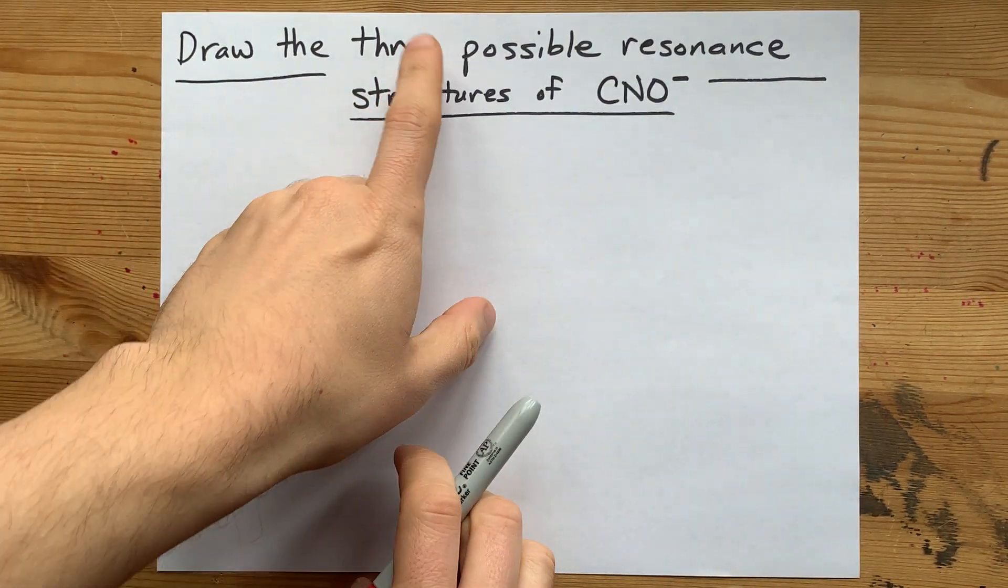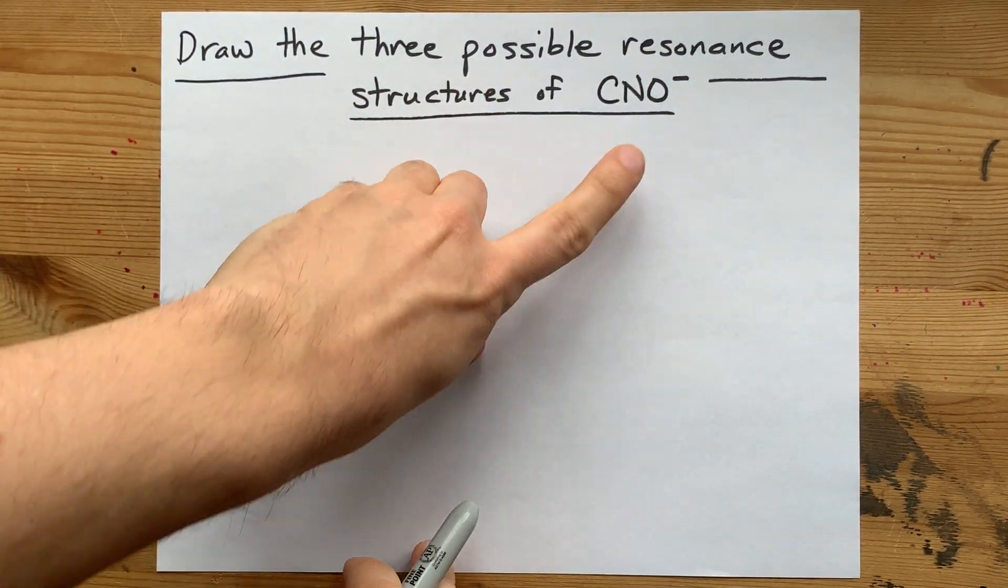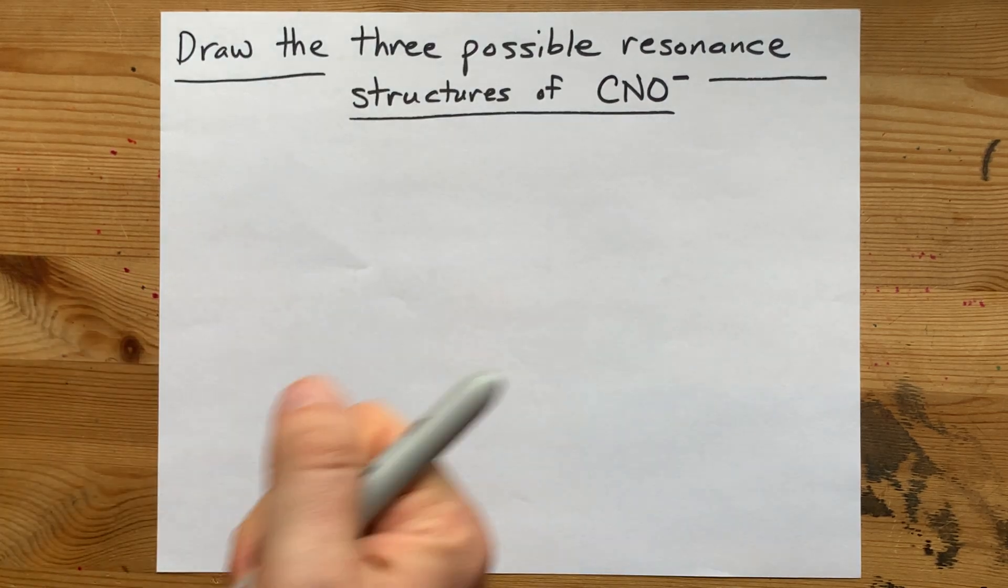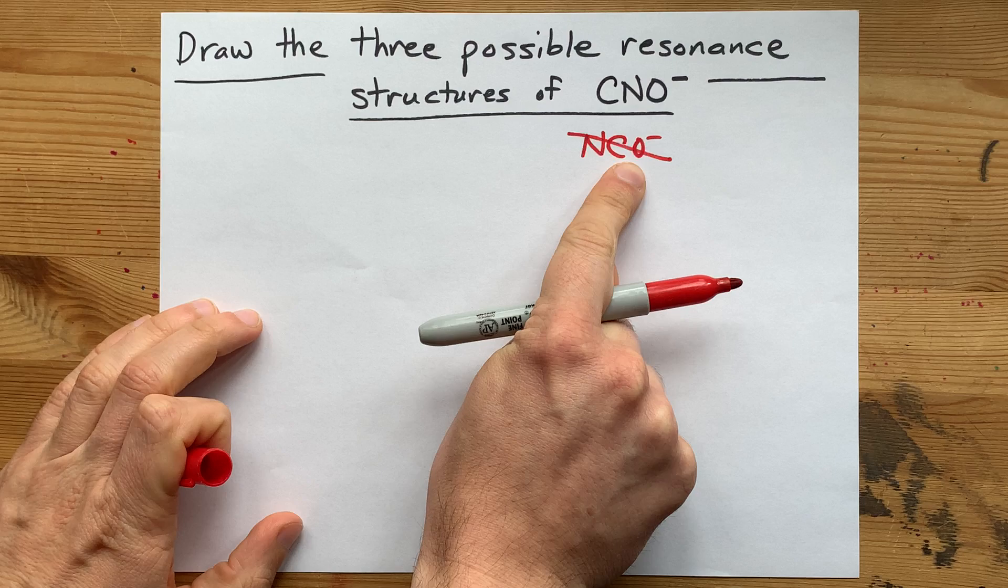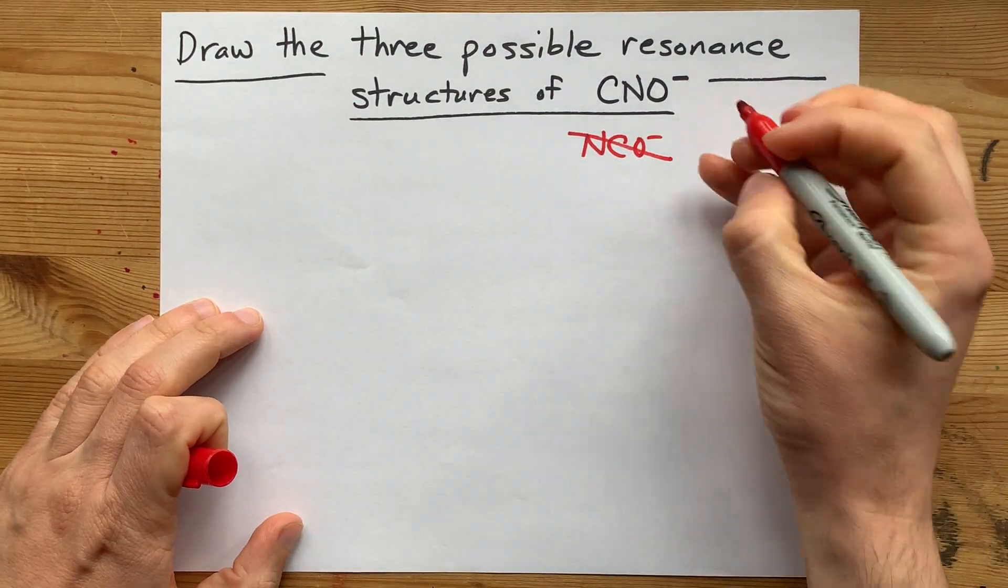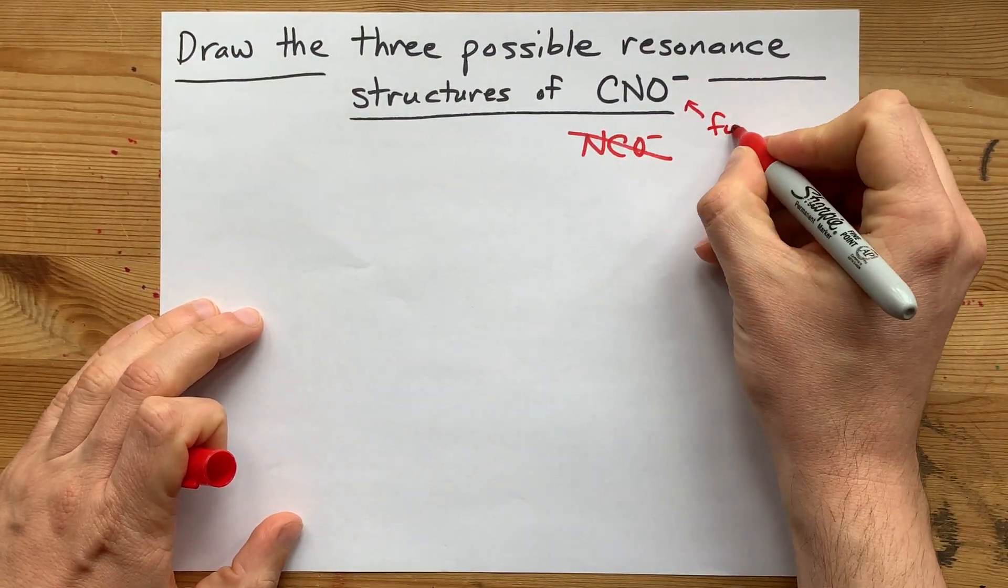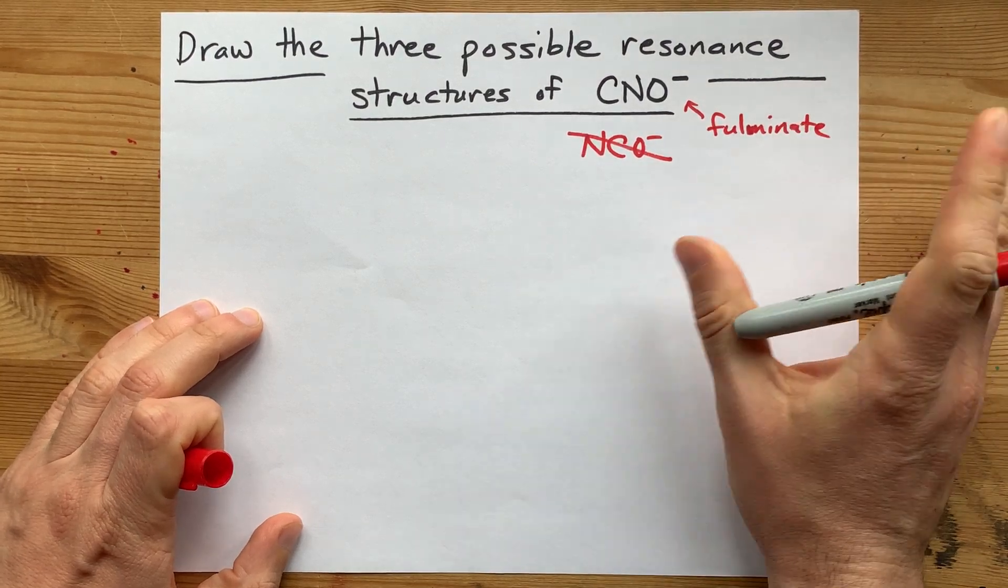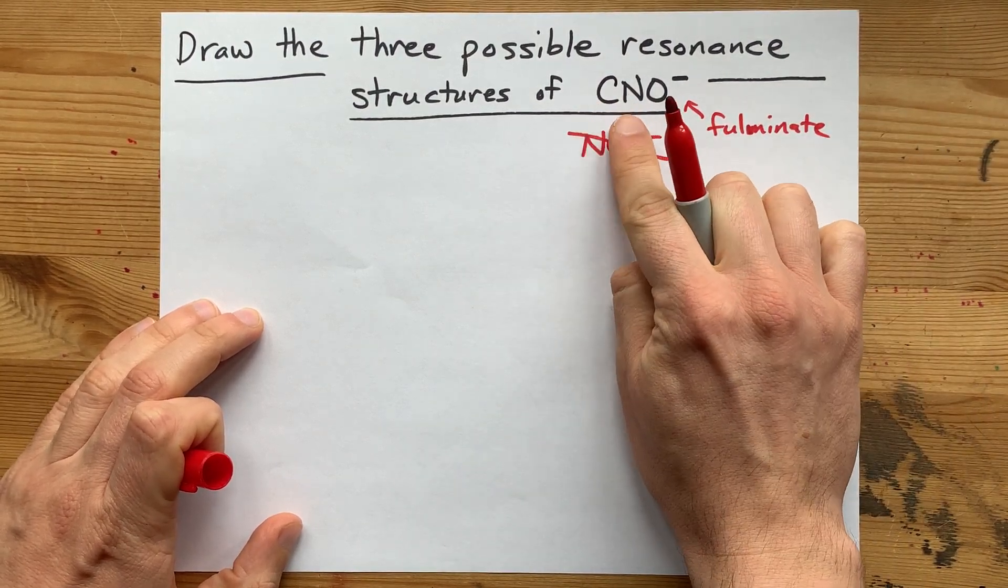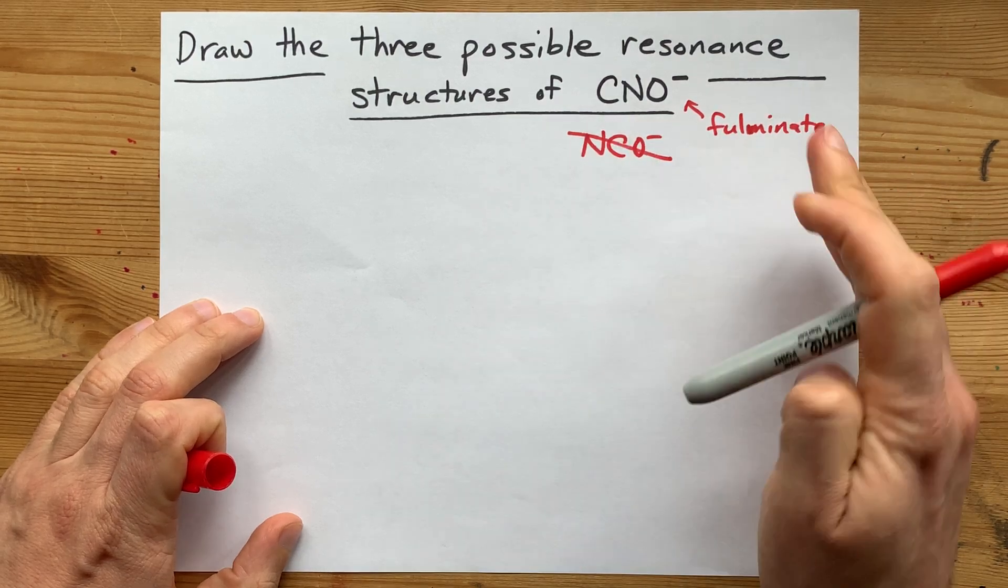I'm going to draw with you the three resonance structures for CNO-. First of all, this is not NCO-, that is a different ion entirely. The one we are talking about is called fulminate. What really matters, though, is that it was written CNO for you by your teacher.